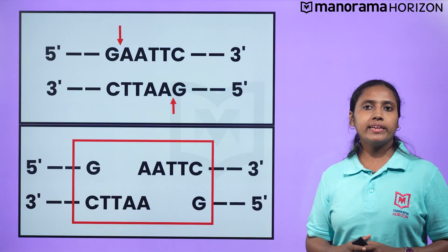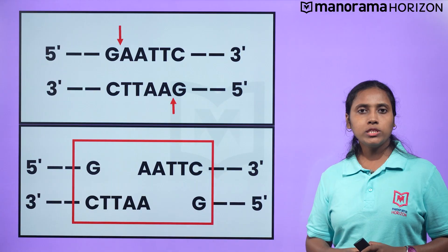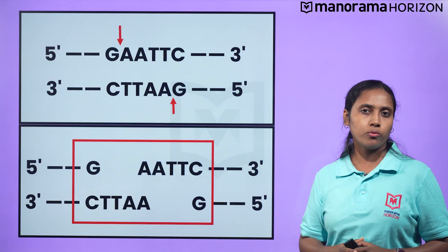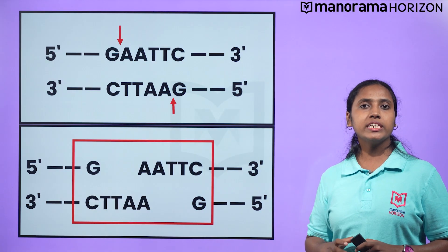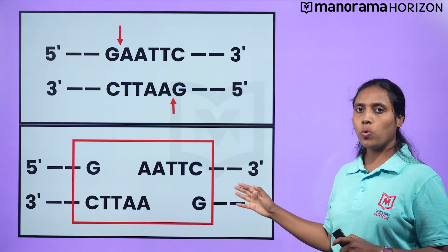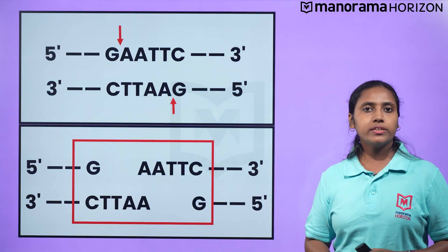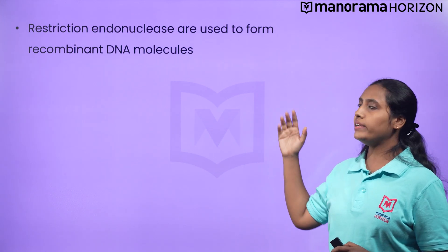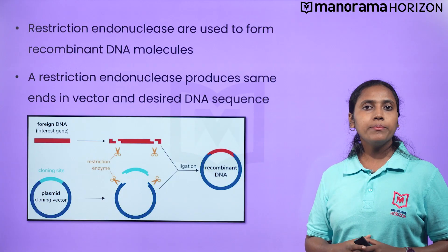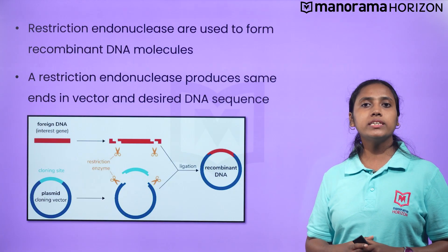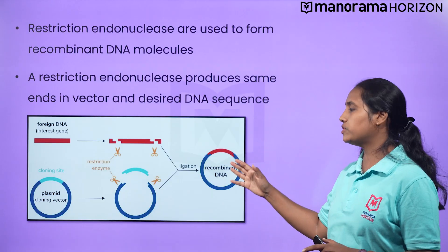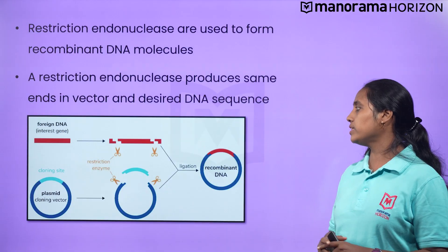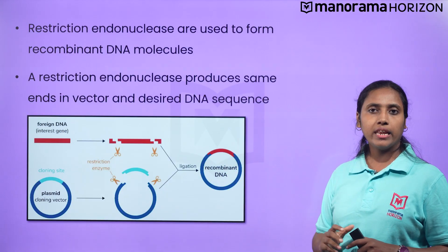These single-stranded overhanging stretches are called sticky ends. They were named sticky ends because they form hydrogen bonds with their complementary cut counterparts. This stickiness helps DNA ligase to act. In genetic engineering, restriction endonucleases are used to form recombinant DNA molecules. When cut by the same restriction enzyme, the resultant DNA fragments have the same kind of sticky ends and can be joined together using the enzyme DNA ligase.